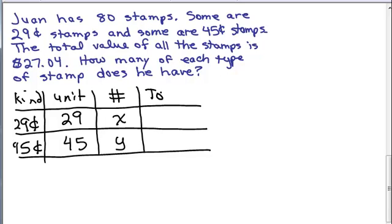Over here, I'm going to put the total value of each type of stamp. Each stamp is worth 29-cents. So if you have X 29-cent stamps, you multiply those together. So the total value of the 29-cent stamps is 29X.